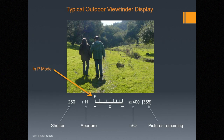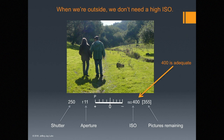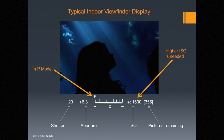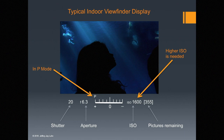This is a typical outdoor viewfinder display. We see a couple of people walking down a trail at a 250th of a second, aperture f11, and ISO 400. This is the ISO setting I would keep my camera on most of the time — we don't need a high ISO outside; 400 is quite adequate. When we go inside, we'll see the display looks pretty dark, and we need to change the ISO to a higher number. The ISO has gone up to 1600 — a big jump from 400 — and that's what we'll need in darker situations.